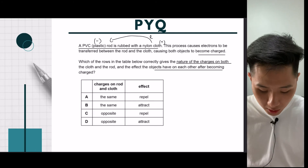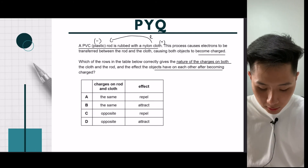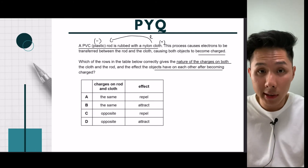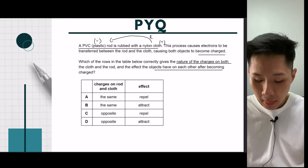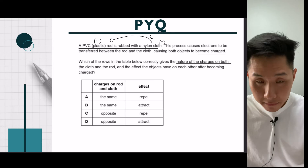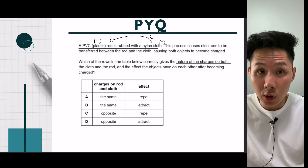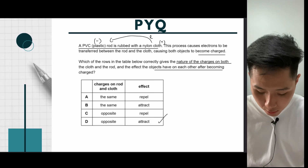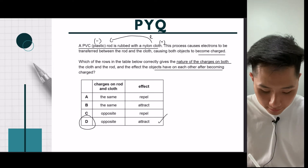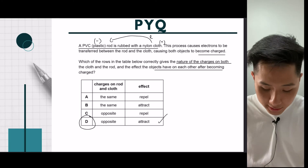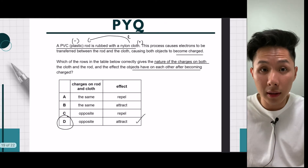We know that the charges on the rod and cloth are going to be opposite to each other. And because of the opposite charges, they will attract each other. Therefore, the answer here should be D.